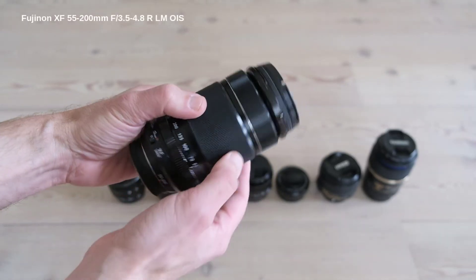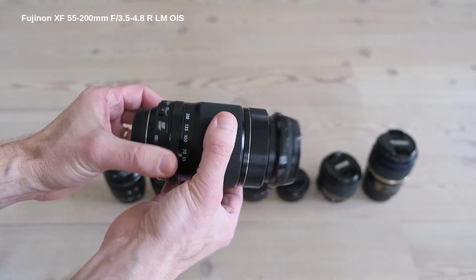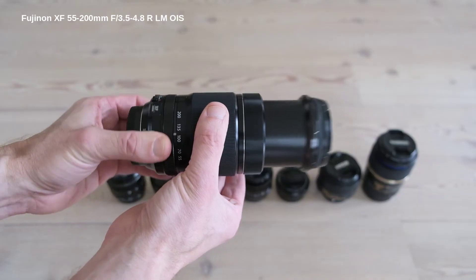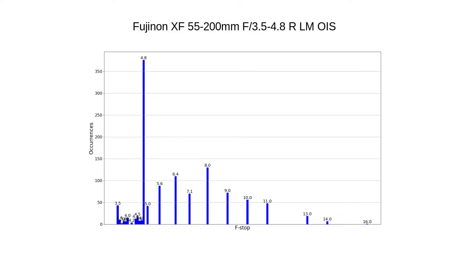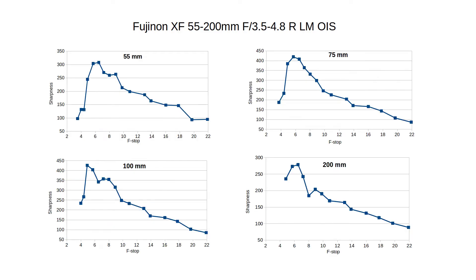Now let's move on to some telephoto zooms. The Fuji XF 55-200 is an outstanding lens for wildlife photography. At 200mm, the lowest f-stop is f4.8, and this is well represented in the graph. While I've taken some landscape shots using a tripod, I primarily use this lens to photograph wildlife. The sharpness profile shows that this lens performs better wide open than stopped down, which is a bit unusual. I make it a habit to determine the sharpness profile for every lens I own, and I've included them in my previous videos.